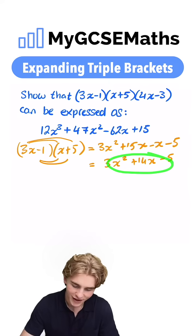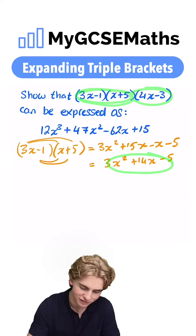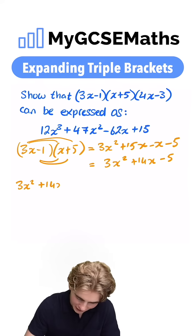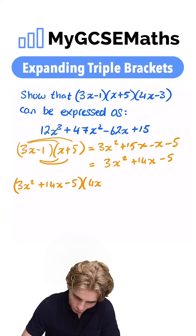Next step, we're gonna have to multiply this, which was equal to 3x minus 1 times by x plus 5, by this, our 4x minus 3. So we're gonna have 3x squared plus 14x minus 5 multiplied by our 4x minus 3.